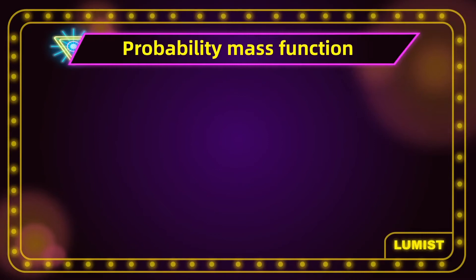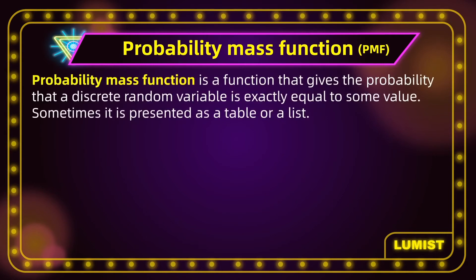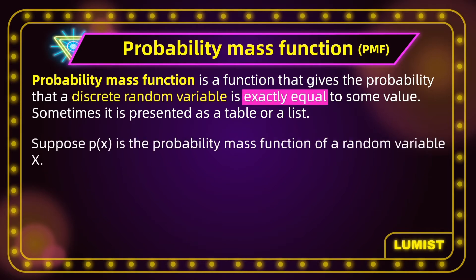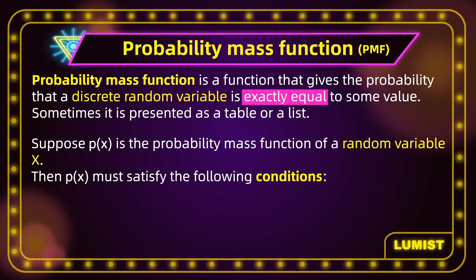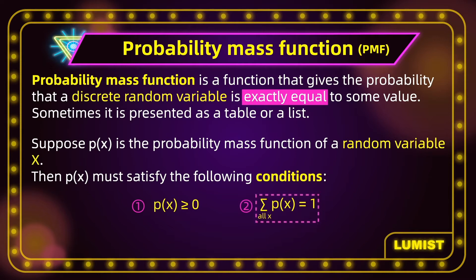Now we will talk about probability mass function, or PMF for short. PMF is a function, or sometimes a table or a list, that gives the probability that a discrete random variable is exactly equal to some value. When we work with PMFs, there are two very important properties to keep in mind. Suppose P(x) is the probability mass function of a random variable x. Then P(x) must satisfy the following conditions: first, the probability of x should be greater than or equal to zero; and second, the sum of all the probabilities of x should be equal to one.